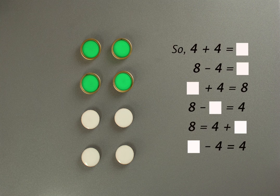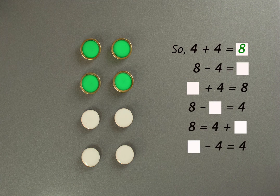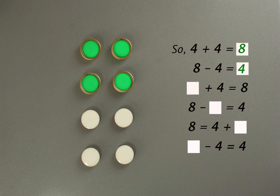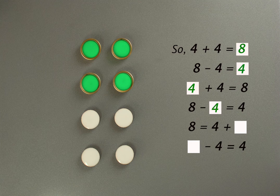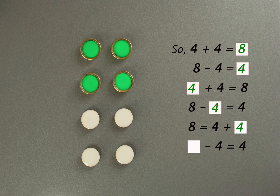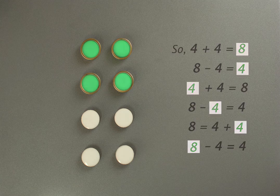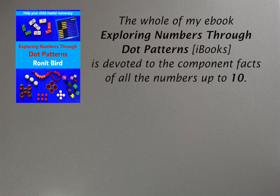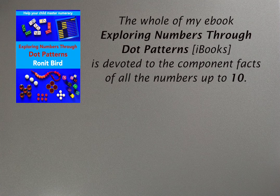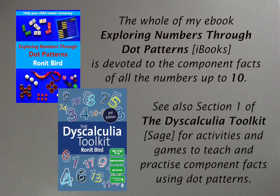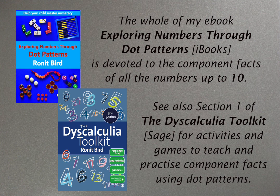This kind of understanding would allow a pupil to answer any of these kinds of questions about the key factor of a number. In this example it's the doubles factor about eight. The whole of my e-book, Exploring Numbers Through Dot Patterns, is devoted to the component facts of all the numbers up to ten, and you can also find ideas in section one of the Dyscalculia Toolkit.